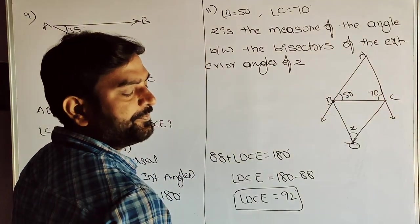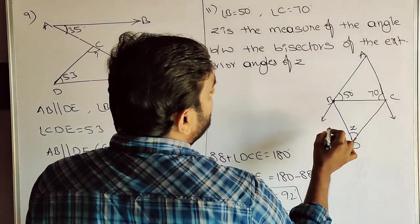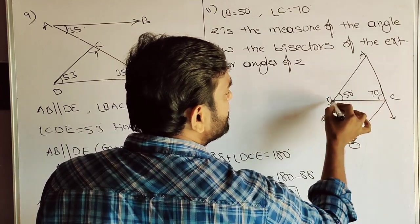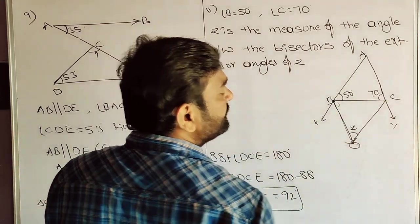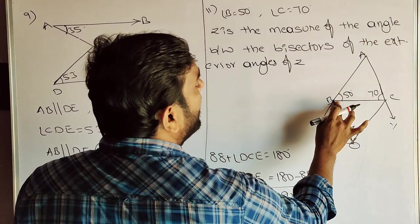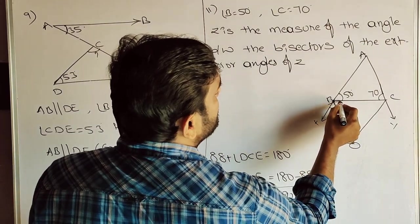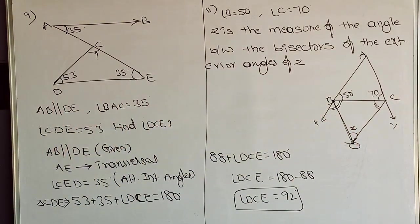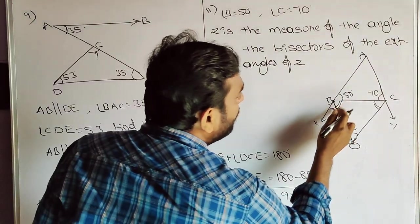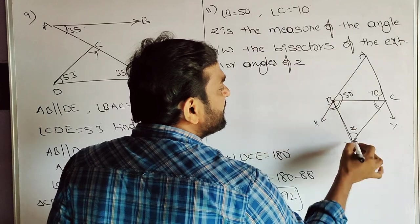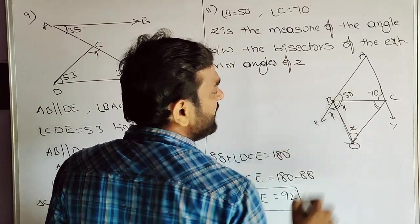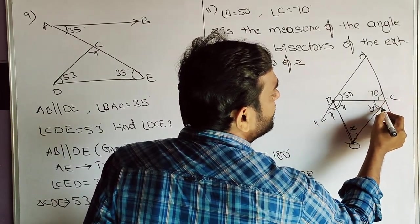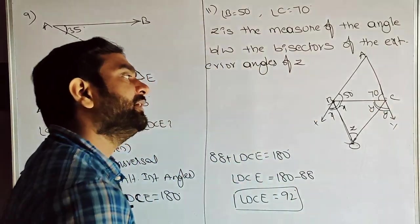Here AC is produced. Z is a bisector of BCX and Z is also a bisector of BCY. Find the angles. Now listen: since Z is the bisector of BCX, if this half-angle is X, the other half is also X. Similarly, for bisector of BCY, if this is Y, the other half is also Y.